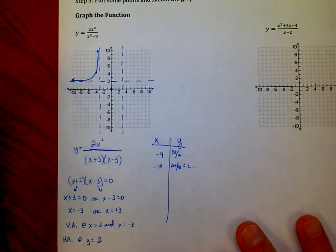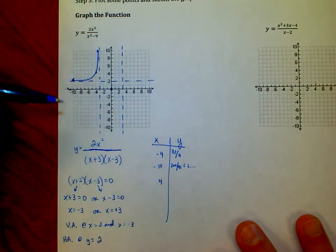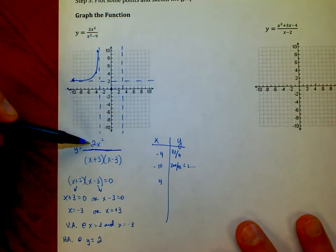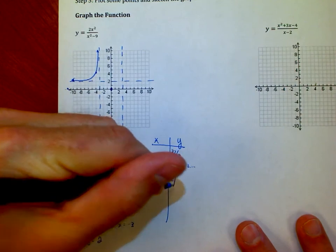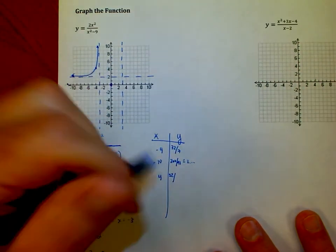Let's go to the other side here. What if I put in a positive 4? If I went all the way to the right side, so I'm working with the right third. 4 squared is 16. 16 times 2 is 32. On the right side, I have 4 plus 3 is 7. 4 minus 3 is 1.